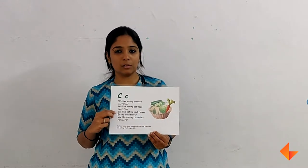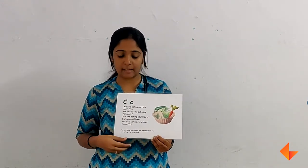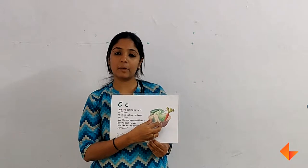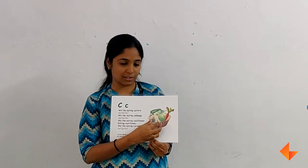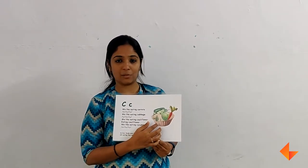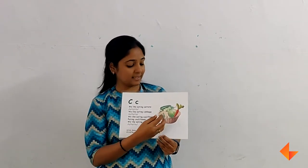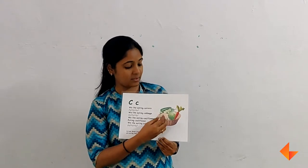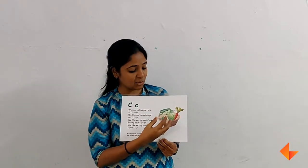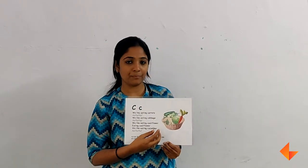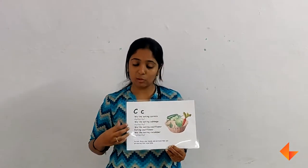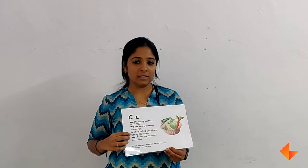Today I am going to show you how to use the phonics card for the letter C. First you will be discussing the picture with your children. Ask your children what do they see in the picture. They might say they see a basket with some vegetables. Ask them to name each vegetable. Once you finish discussing the picture, then you move on to the rhyme.